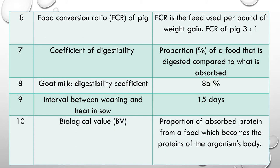Question 6, an extension of Question 5: The feed conversion ratio (FCR) — what is the FCR of a pig? FCR is the feed used per pound of weight gain. The FCR of a pig is 3:1. If this ratio is less, the feed conversion ratio is considered more efficient.